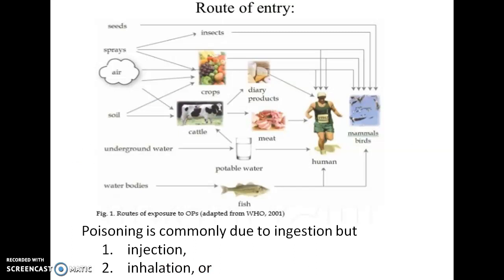Let us now see the routes of entry of poison, taking organophosphorus poisoning as an example. Various routes of exposure can be noticed here — by injection, by inhalation, or by exposure of the body surfaces with these substances — which may act as a route of entry of poison.